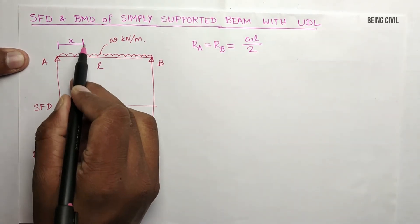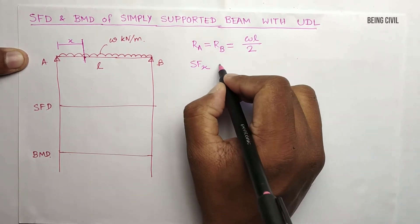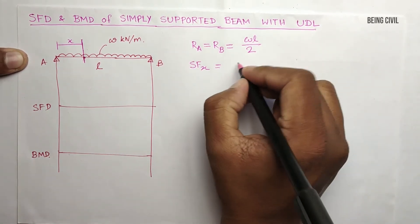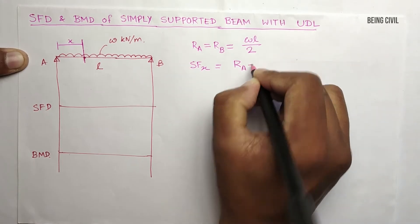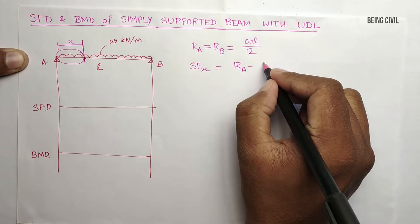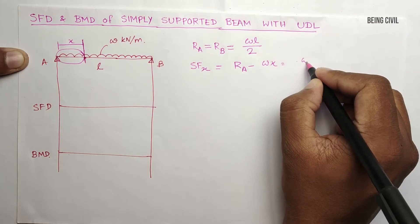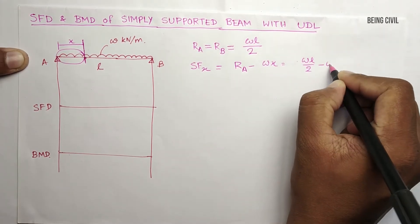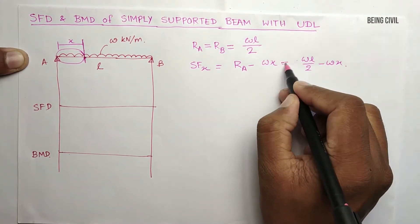Now the shear force at a distance of X will be SFx equals RA minus the loading of this area, which is W into X. So WL by 2 minus WX. This is the equation of shear force.